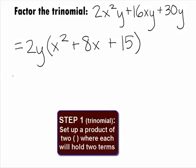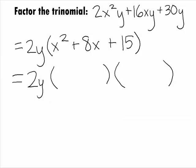In Step 1 of factoring the trinomial that's within the parentheses, we want to set up a product of 2 binomials. When we do this, we want to make sure we still keep that Greatest Common Factor of 2y on the outside.